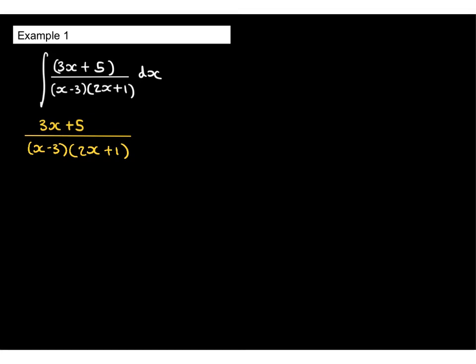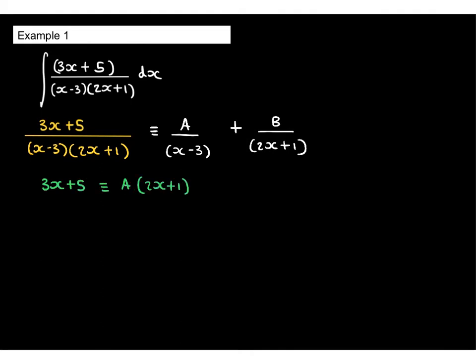So we're going to have A over x minus 3 plus B over 2x plus 1. We can then say that 3x plus 5 is equivalent to A bracket 2x plus 1 plus B bracket x minus 3. You may need to remind yourselves of the partial fractions work covered previously. I'm giving the fractions on the right a single common denominator and equating the numerators once all denominators are the same.